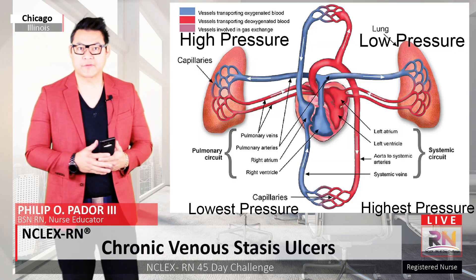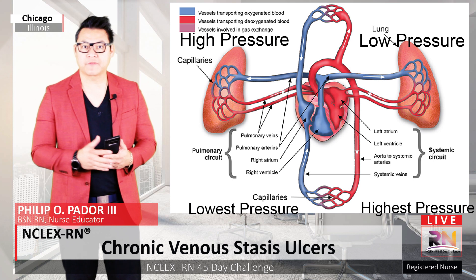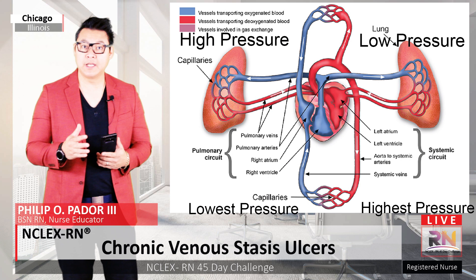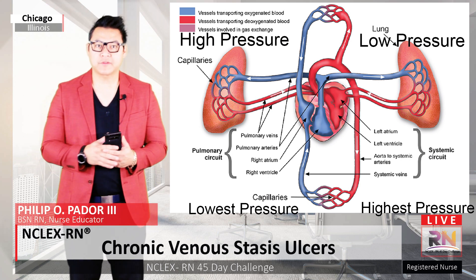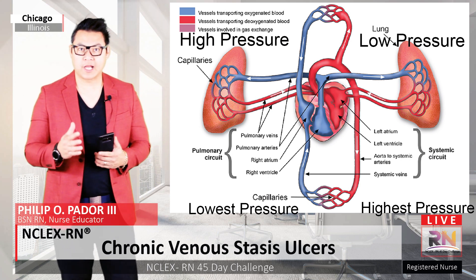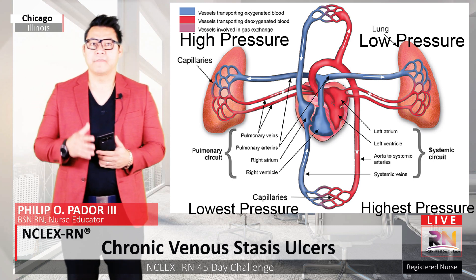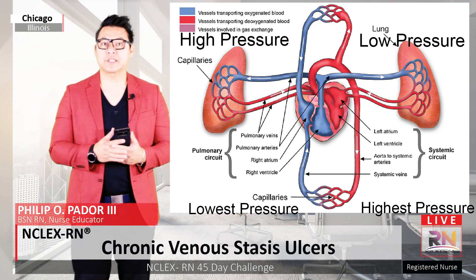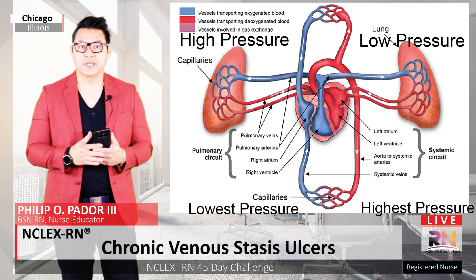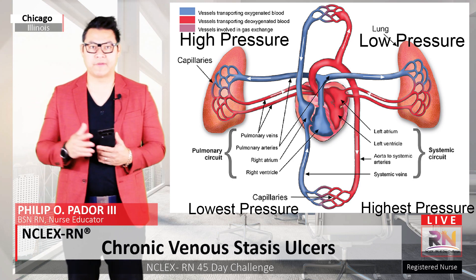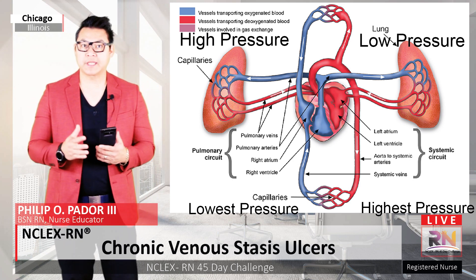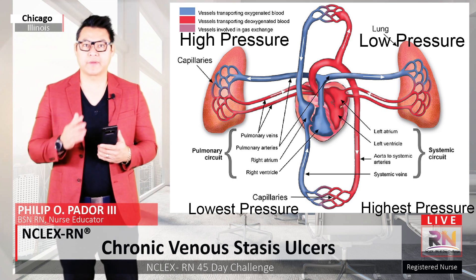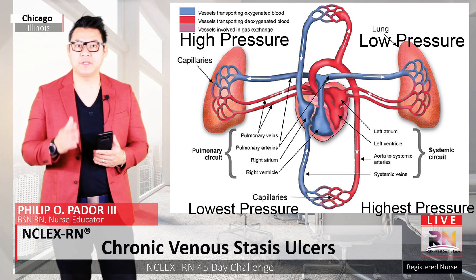Veins are responsible for carrying the unoxygenated blood back to the heart from various bodily tissues. The venous system operates at a relatively low blood pressure, relying on the contraction and expansion of the skeletal muscles to propel blood past the one-way valves in the veins on its way back to the heart. The circulatory system relies on the pressure gradient to push blood through the arteries and into the veins. When this pressure gradient is inhibited by blood clots or valve deficiencies, blood can pool and create larger clots, causing venous stasis ulcer.